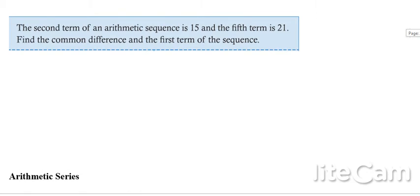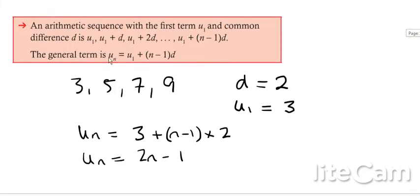Here we go. This is a slightly more difficult question and more likely to get as an IB high level question. The second term of this sequence is 15, the fifth term is 21. Find the common difference and the first term. I'm going to start by saying...